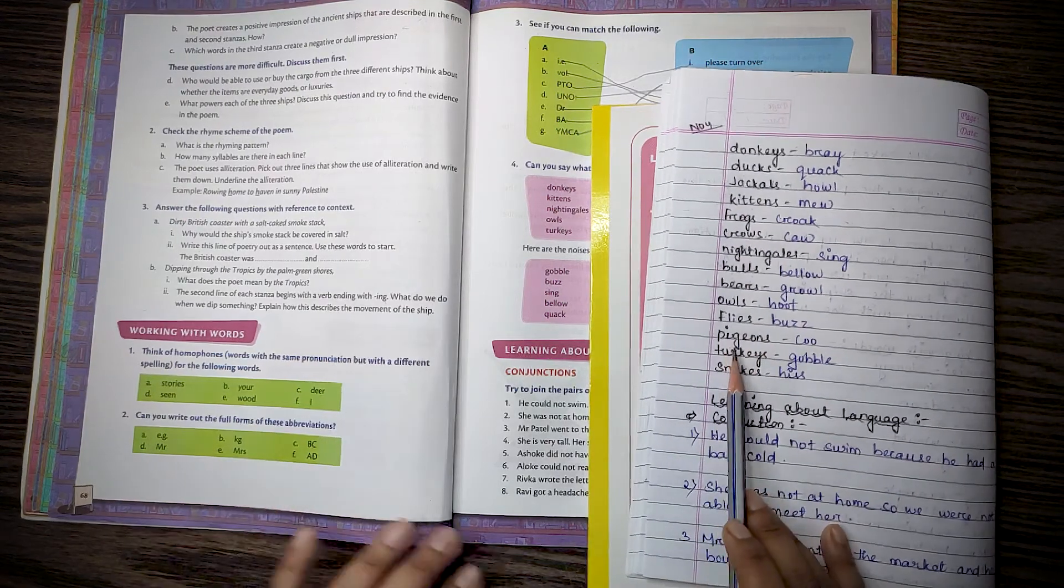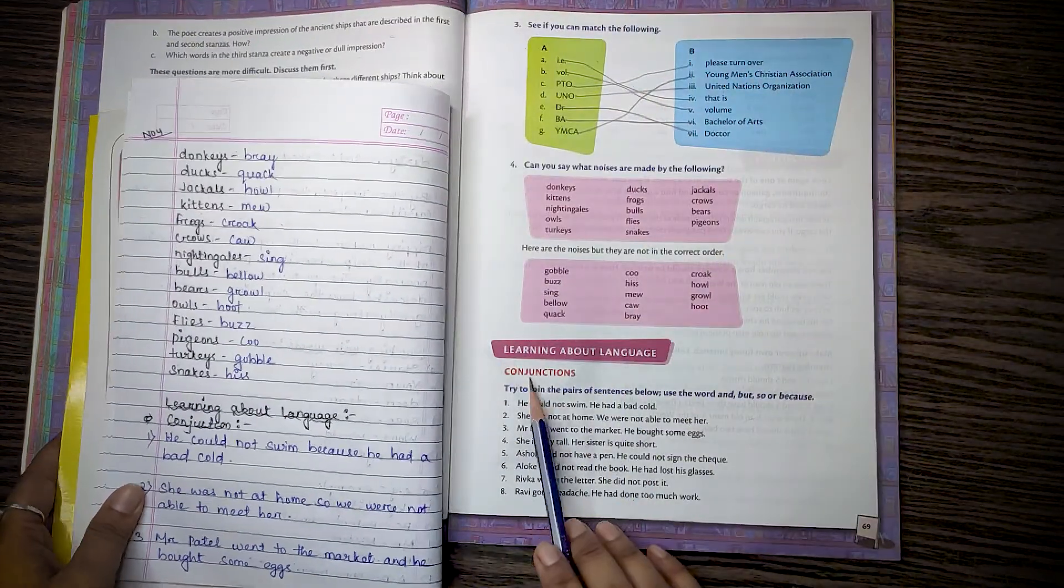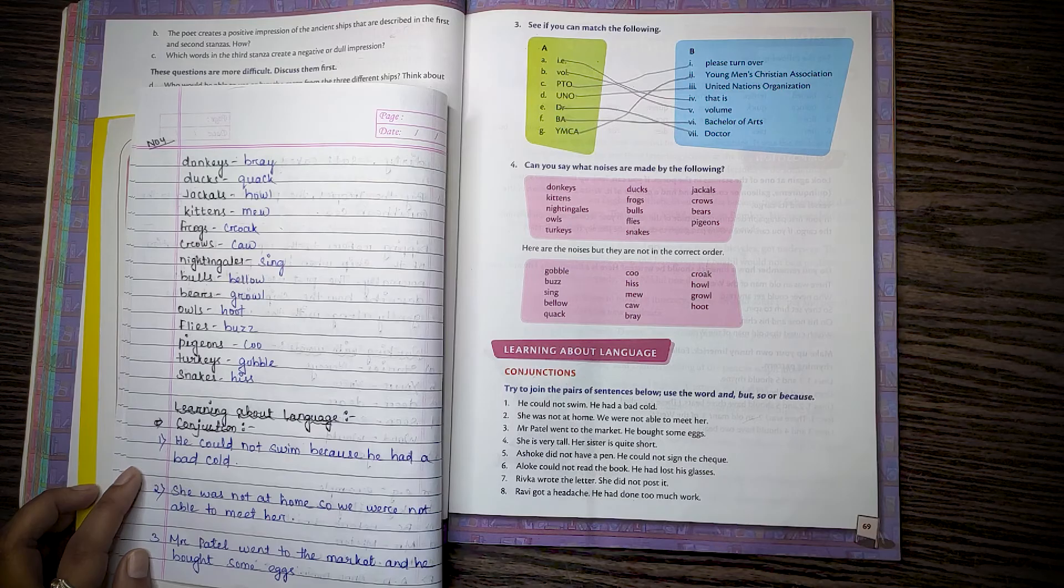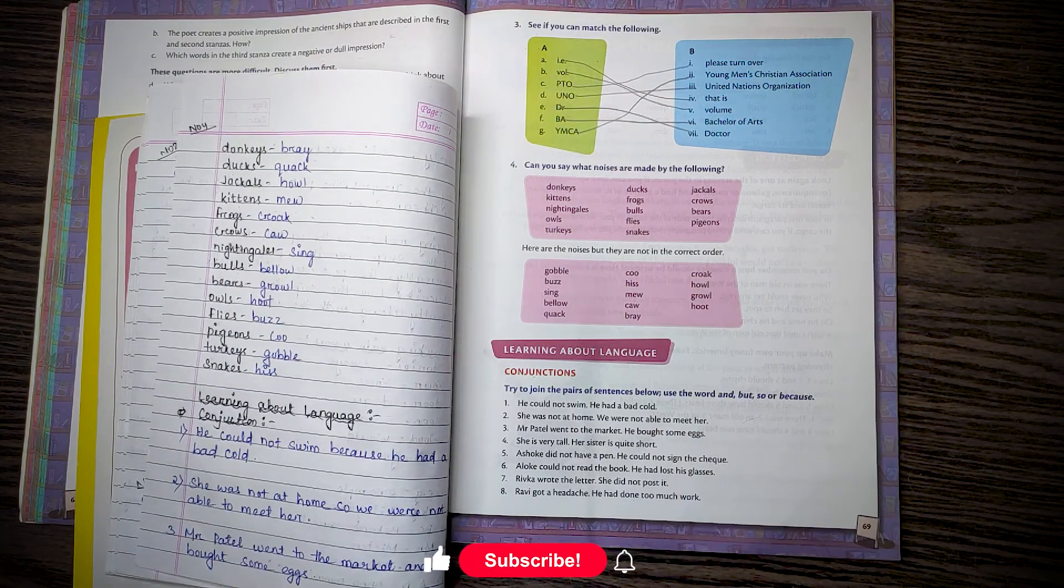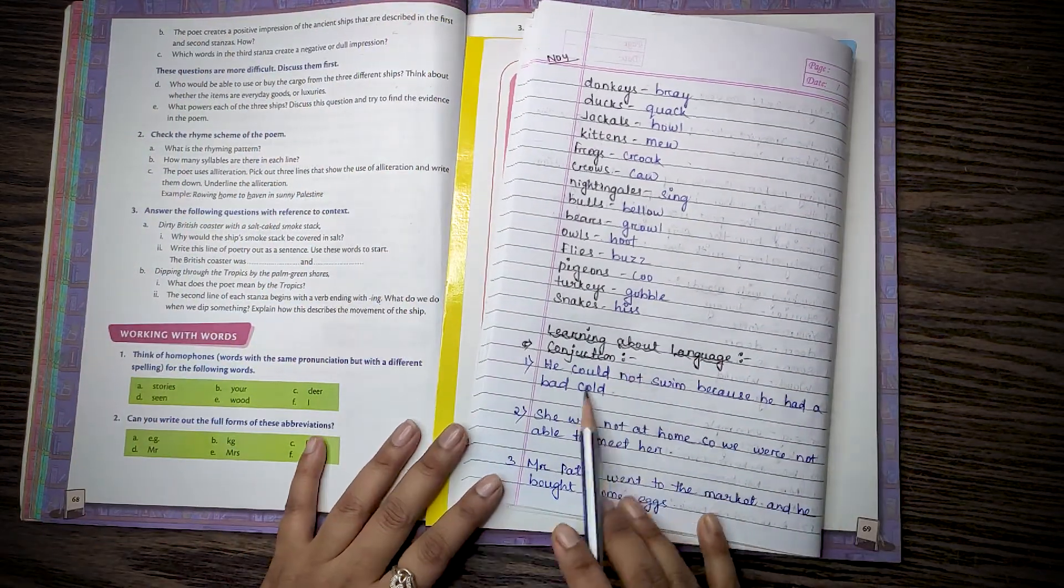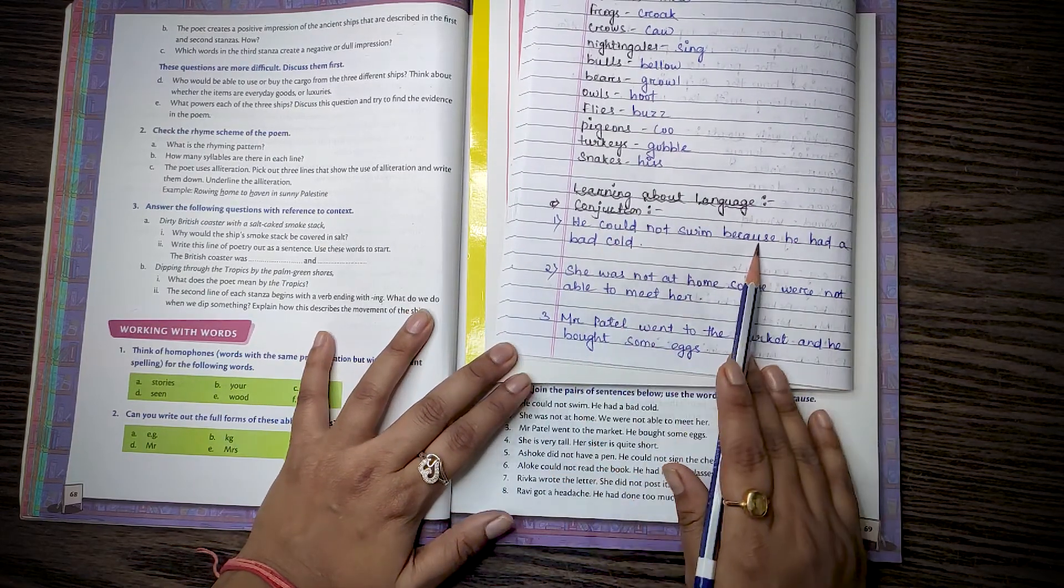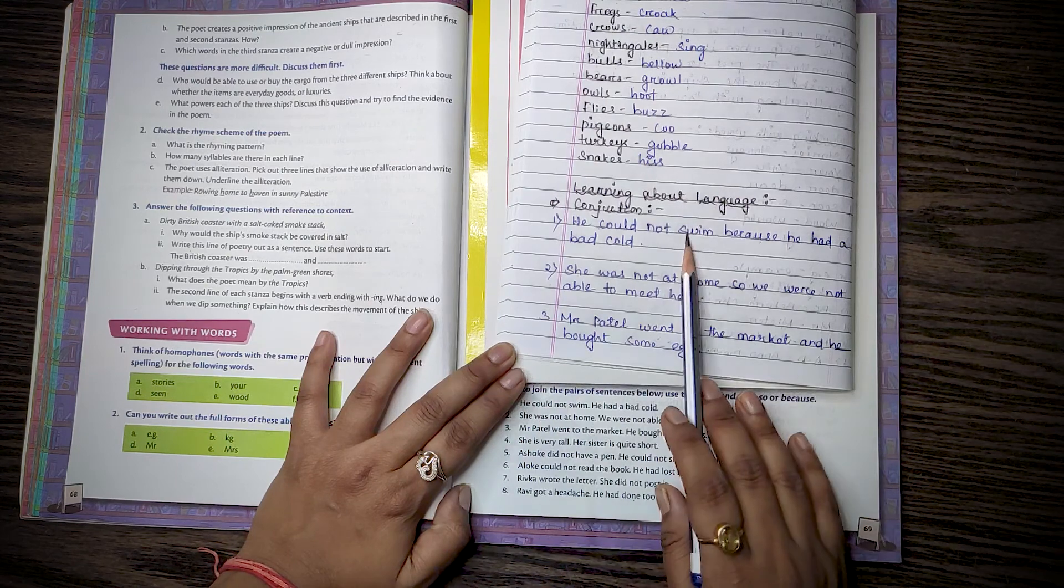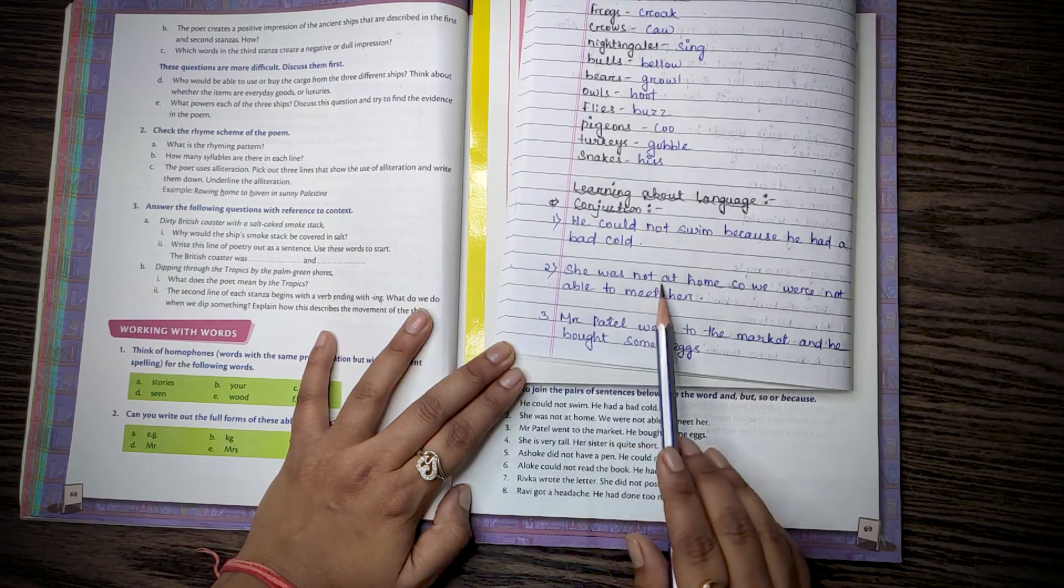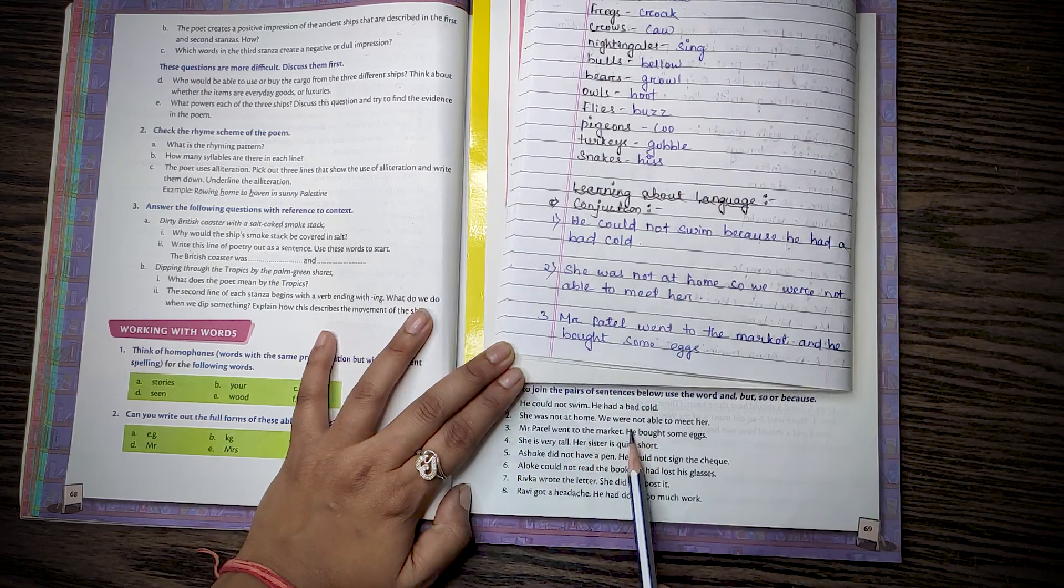Then learning with language conjunctions. Try to join a pair of sentences below. Use the word and, but, so, or, because. Conjunction connects parts of a sentence together. We will use these words to join the sentences. Number 1, he could not swim. He had a bad cold. He could not swim because he had a bad cold. She was not at home. We were not able to meet her. She was not at home so we were not able to meet her. Mr. Patel went to the market. He bought some eggs. Mr. Patel went to the market and he bought some eggs.